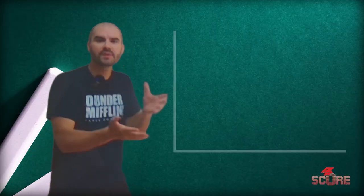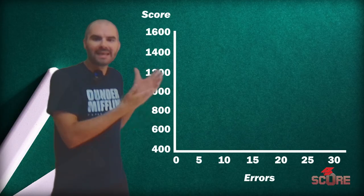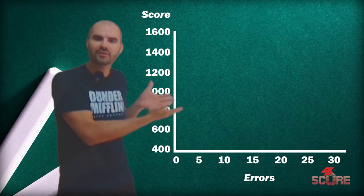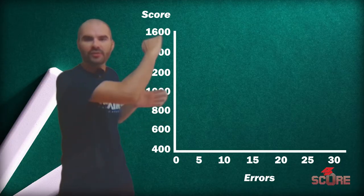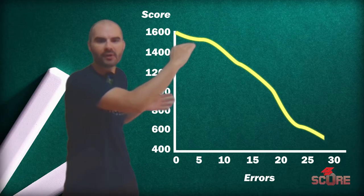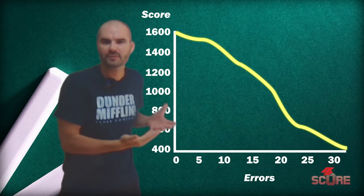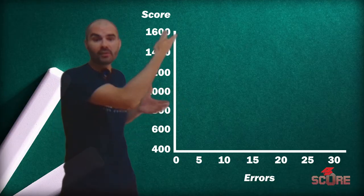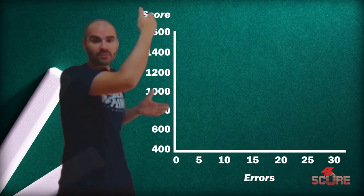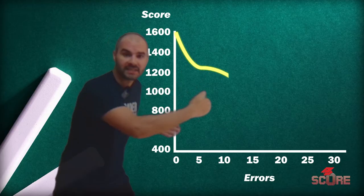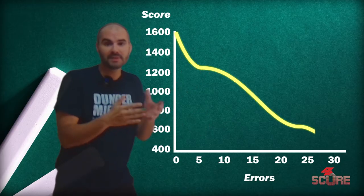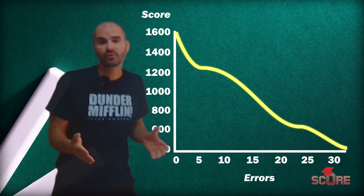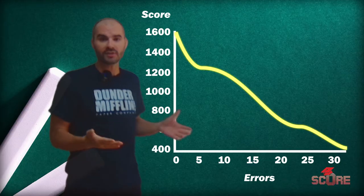A test that was really hard might have a generous curve, where your score doesn't really go down very much with your first few mistakes. But an easy test might look more like this, where you have a really steep drop because missing just one or two questions could cost you a lot of points.